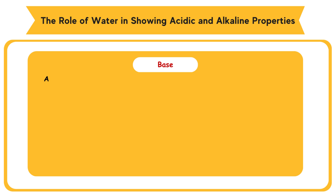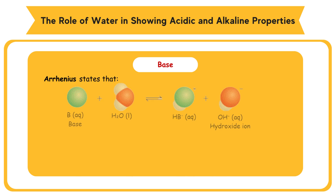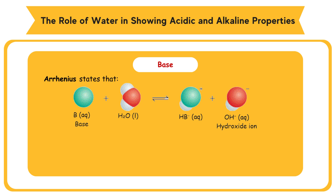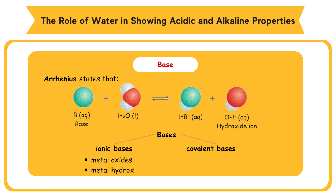Base. Arrhenius states that a base is a chemical substance that ionizes in water to produce hydroxide ions, OH⁻. Bases are divided into two categories: ionic bases and covalent bases. Ionic bases consist of metal oxides and metal hydroxides.